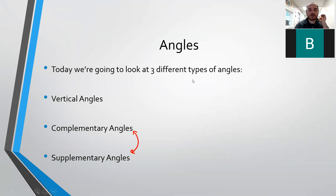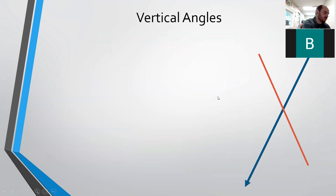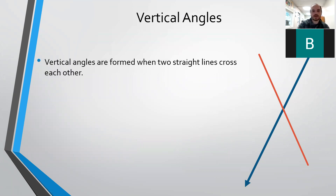We're going to jump right into it. Vertical angles are created whenever two straight lines cross each other. In this case, we've got two sets of vertical angles.